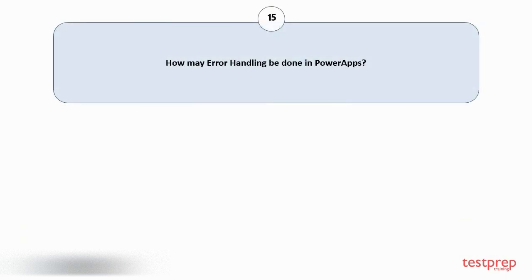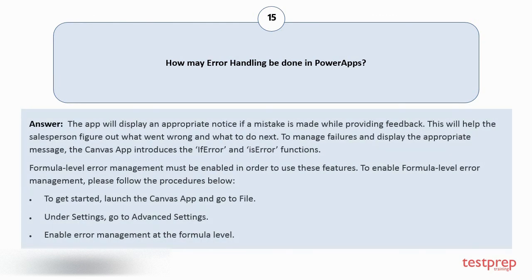Question number 15. How may error handling be done in Power Apps? The app will display an appropriate notice if a mistake is made while providing feedback. To manage failures and display the appropriate message, the Canvas app introduces the IfError and IsError functions. Formula level error management must be enabled in order to use these features. To enable it: 1. Launch the Canvas app and go to File. 2. Under Settings, go to Advanced Settings. 3. Enable error management at the formula level.